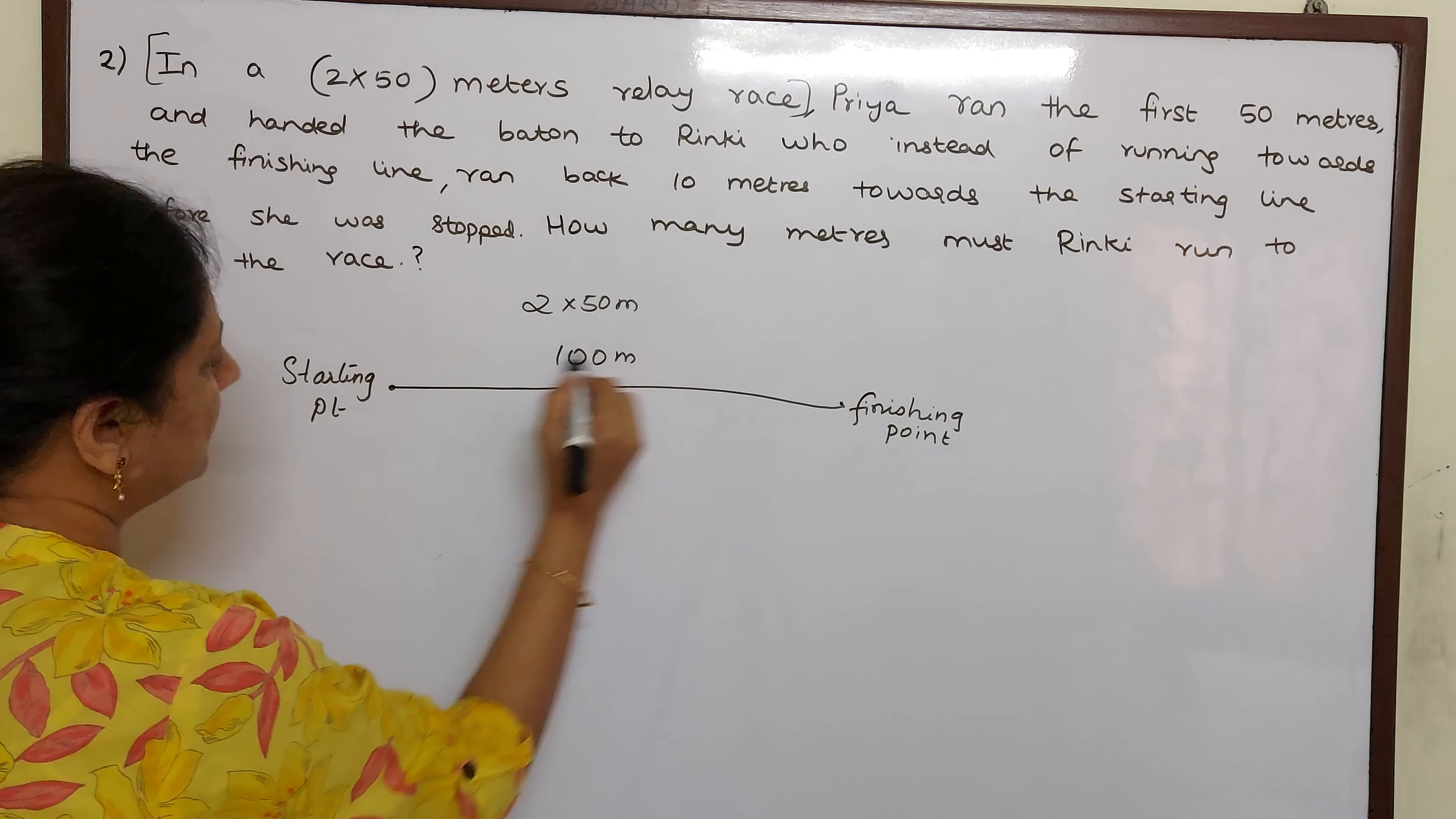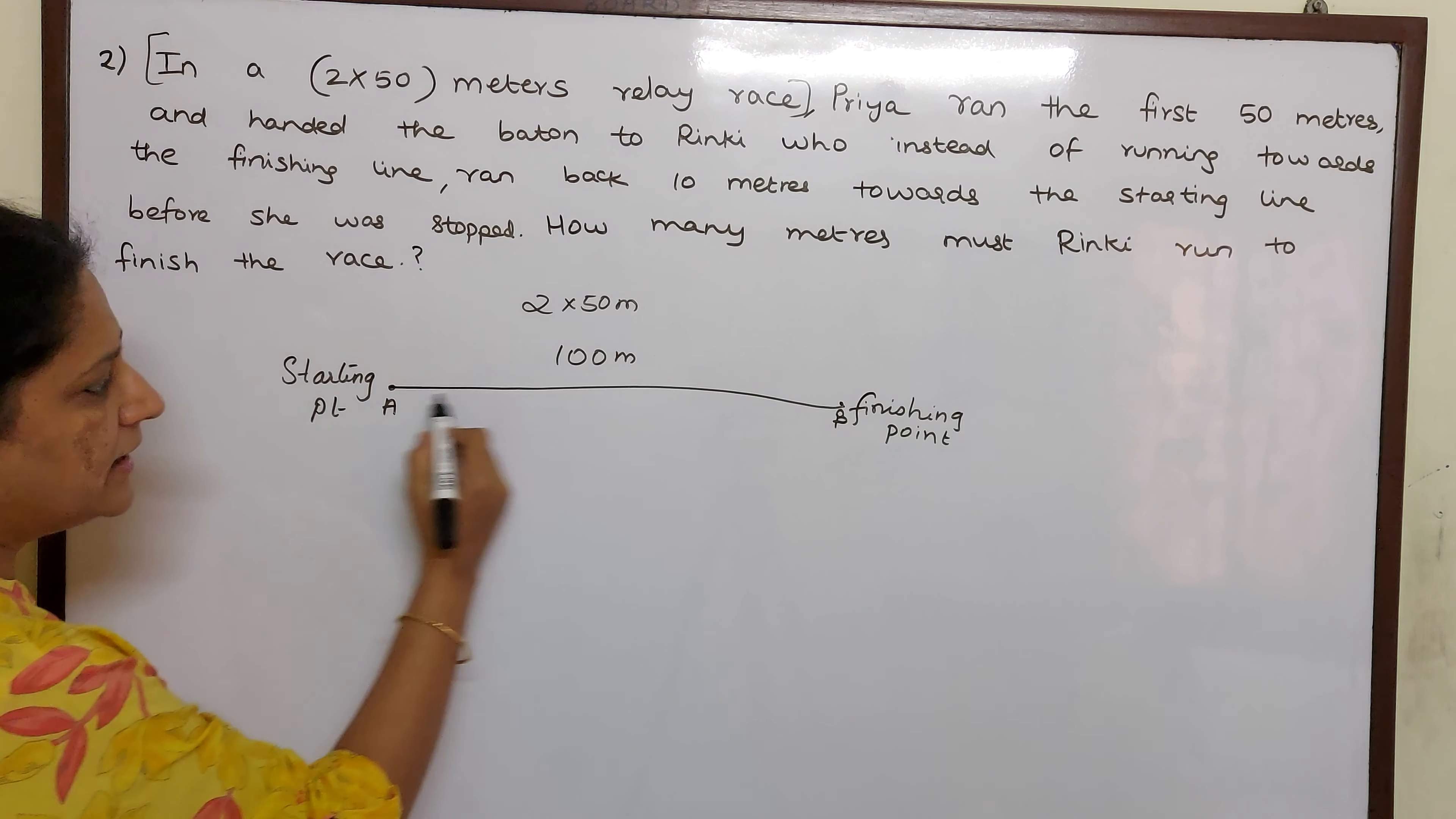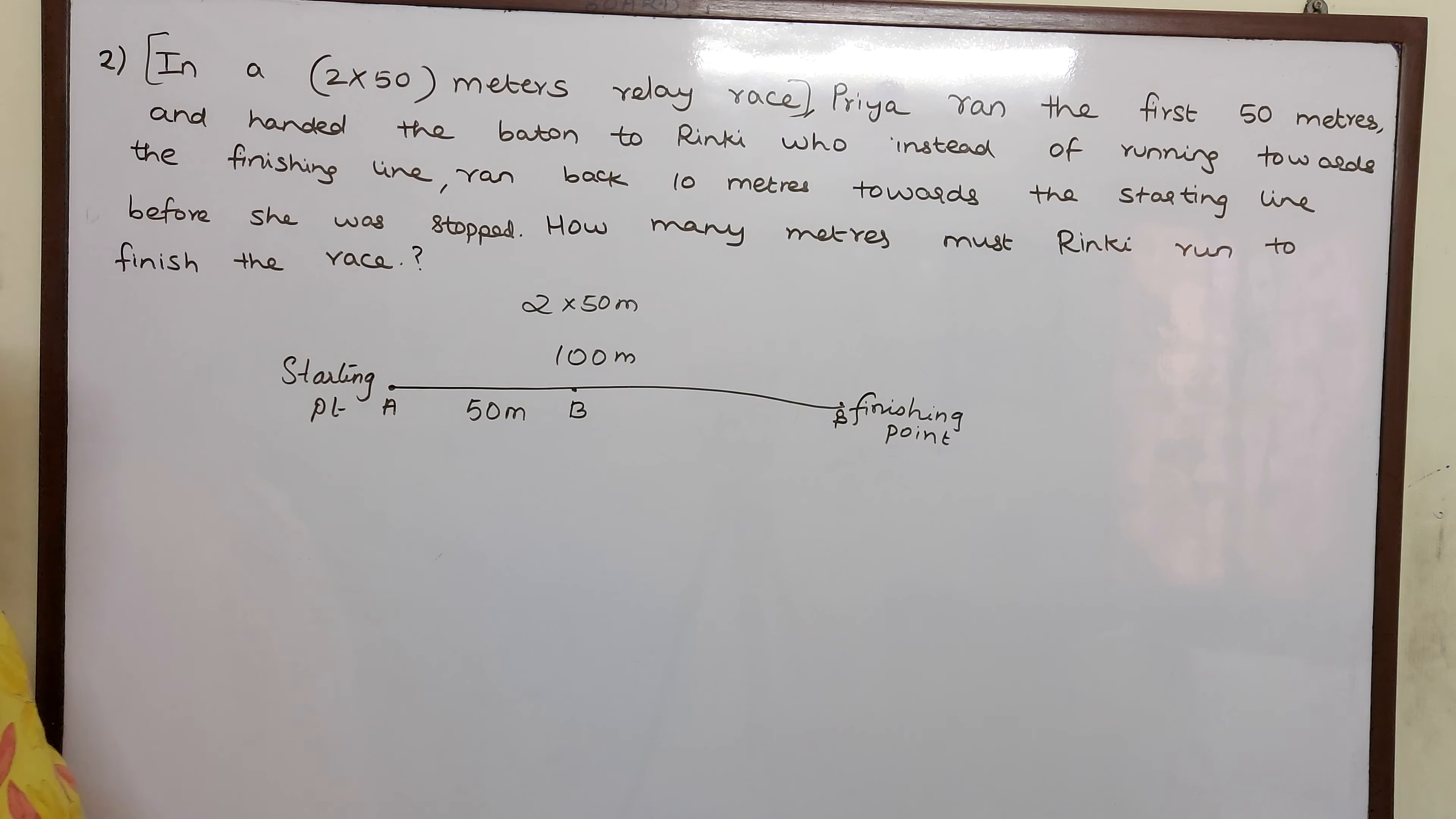So they have to run from A to B and finish this 100 meters. Priya ran the first 50 meters. So Priya is starting from here and she is finishing here and completing a 50 meter stretch.